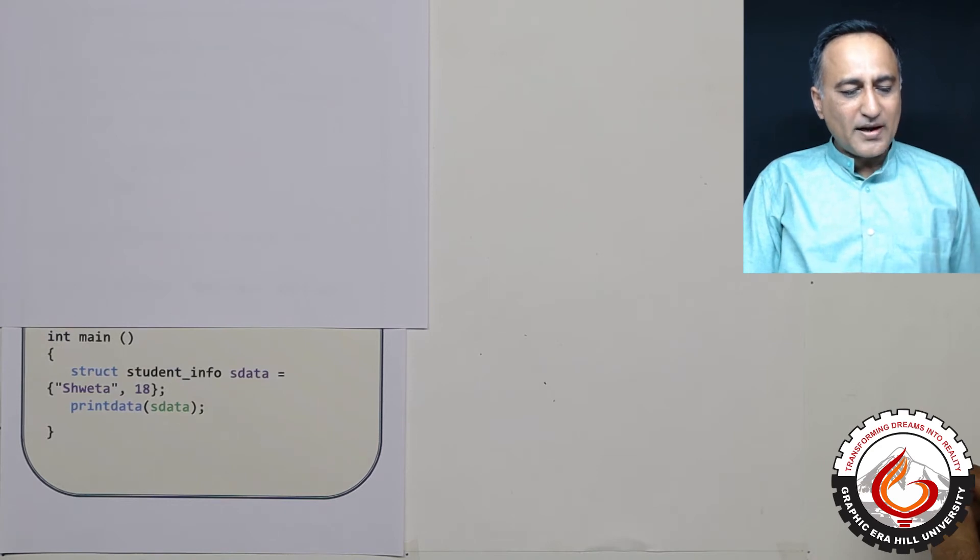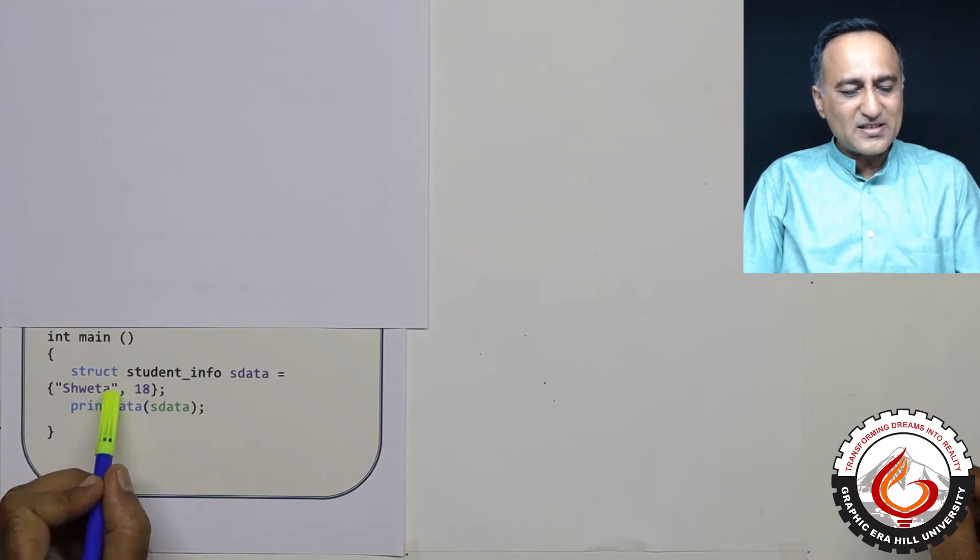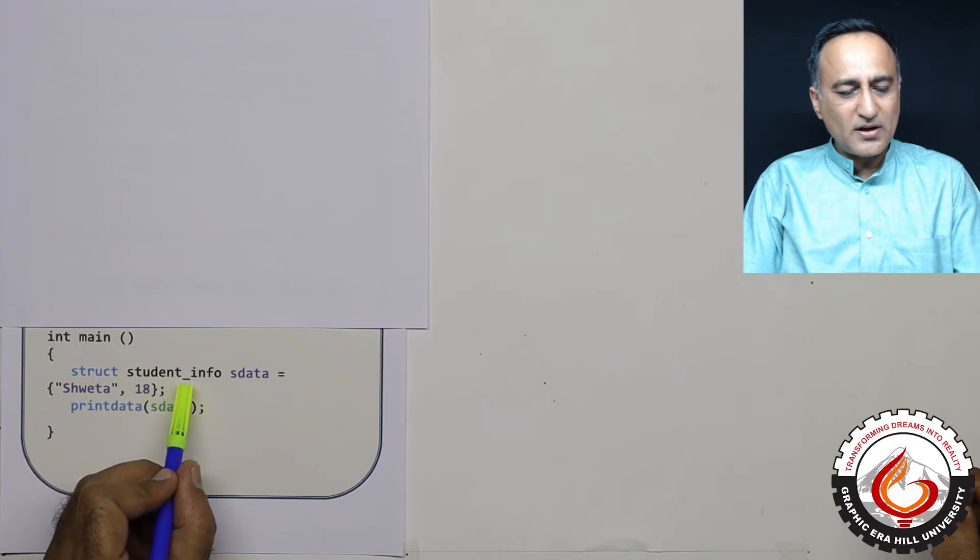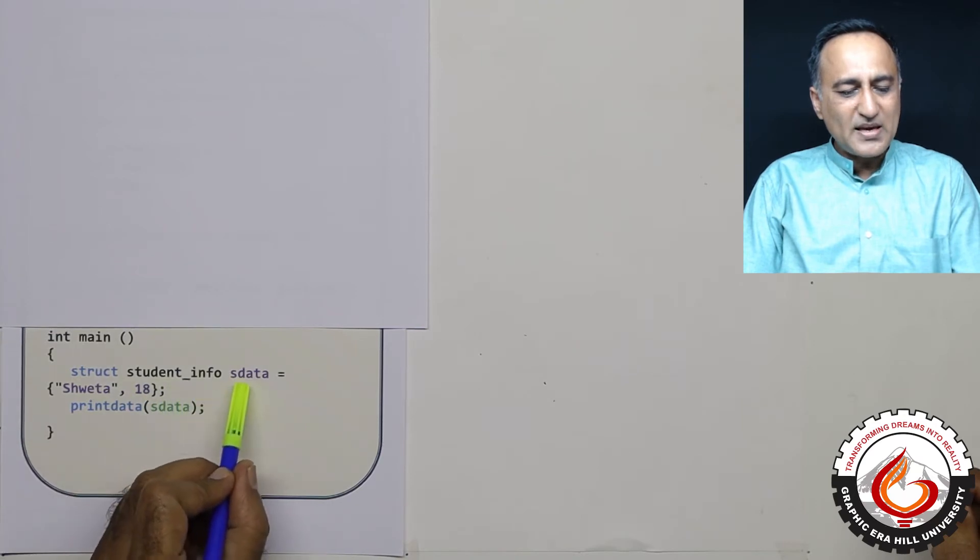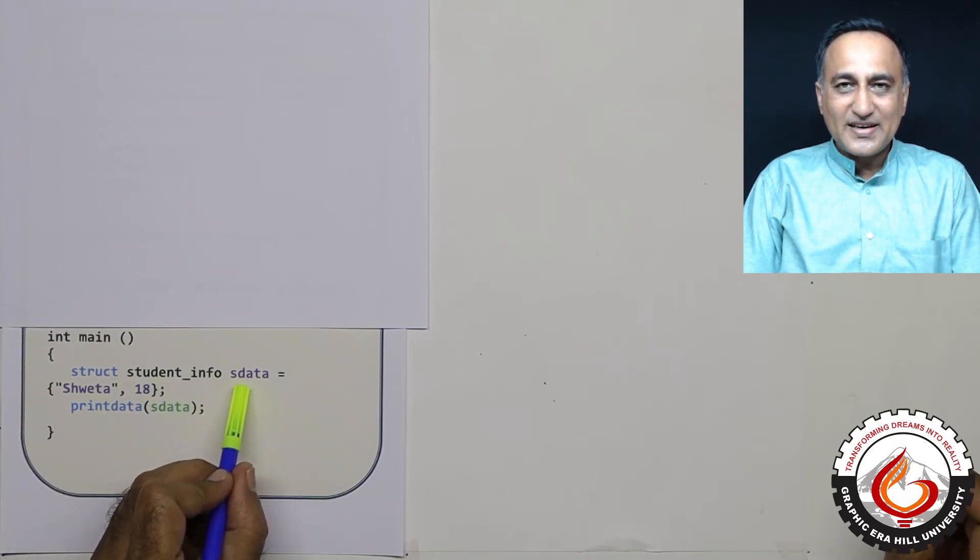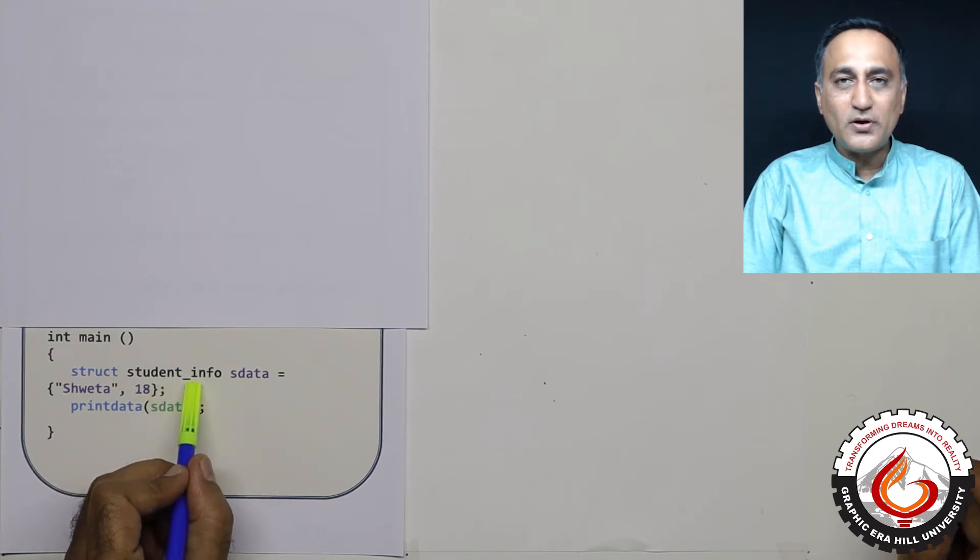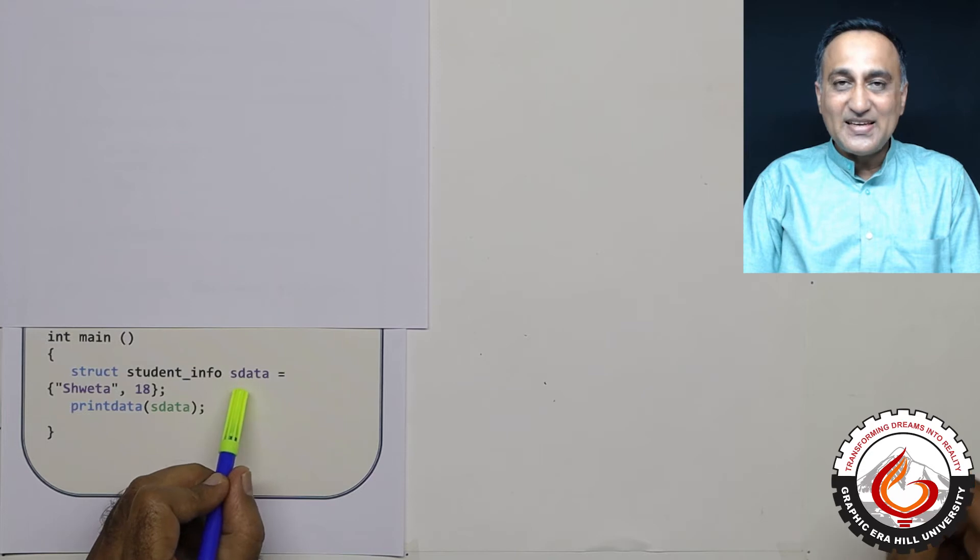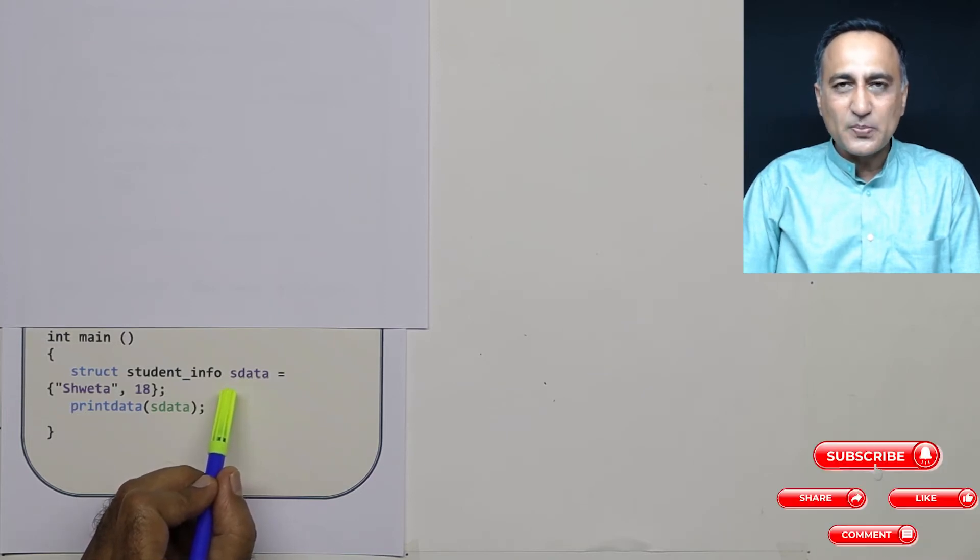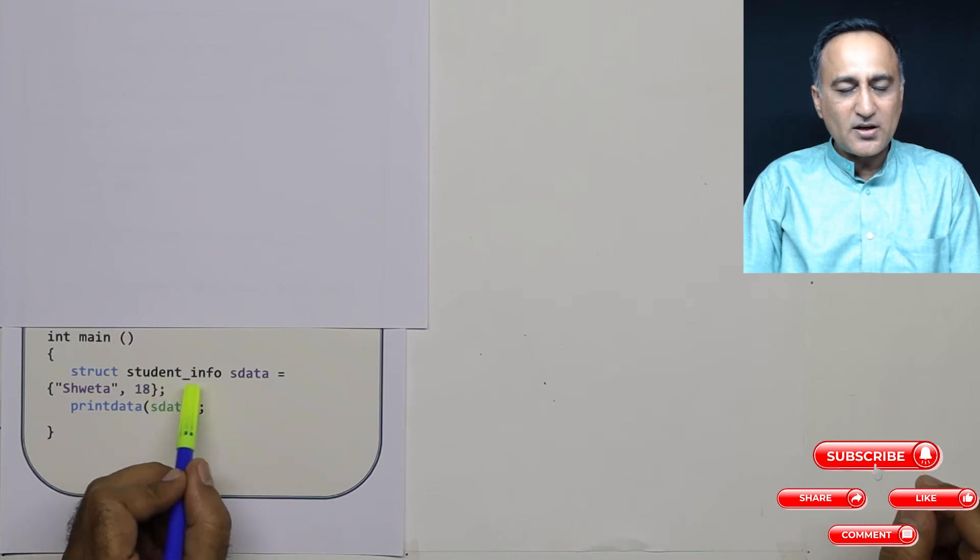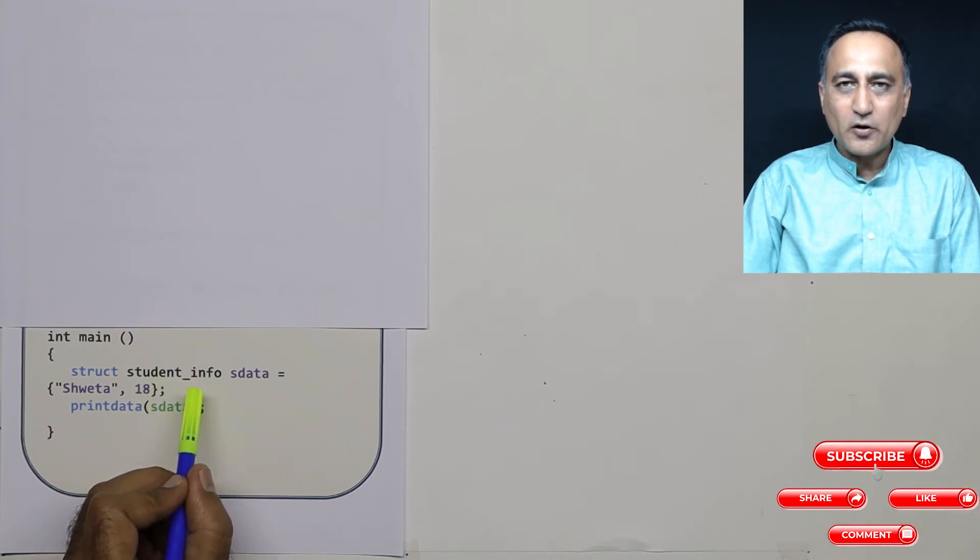In main, I have defined a struct of the type student_info with the name sdata. So sdata is a variable of this student_info type, which means sdata is the actual structure created in memory with space allocated. student_info is just a blueprint or model.